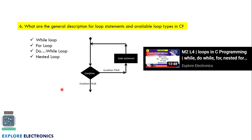What are loop statements and which are they? This is again an important question. You can see the playlist for detailed explanation on while, do-while, for loop, and nested loop. Generally, a loop will have a condition — if the condition is true, a set of statements is executed, then the condition is checked again. If the condition is false, it comes out of the loop. while loop, for loop, do-while loop, and nested loop are the important loop statements in C.